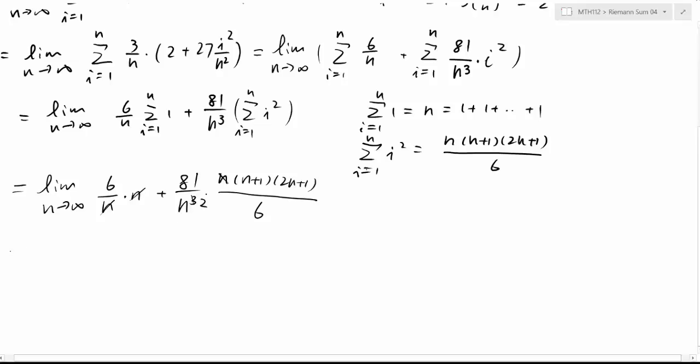So we have now the following limit: limit n going to infinity, here is just 6, a constant. And then here we have 81 divided by 6, which is 27 over 2, and then we still have 2n, so we have (n plus 1) times (2n plus 1) over n squared.